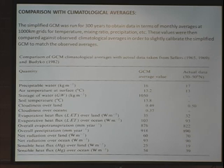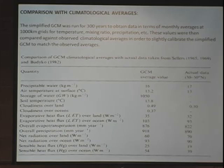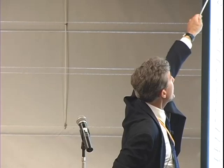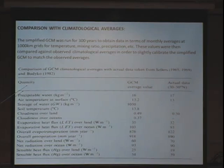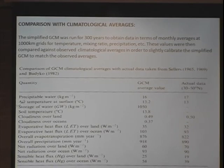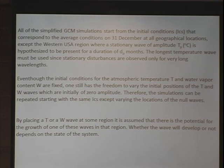In this study, we ran the simplified GCM for 300 years to obtain data in terms of monthly averages at 1,000-kilometer grids. The circumference at the 30 to 50 degree north band is roughly 30,000 kilometers, giving about 30 grids at 1,000-kilometer resolution — for temperature, mixing ratio, precipitation, etc. We then compared these values against observed climatological averages to slightly calibrate the simplified GCM, and we were comforted by the closeness of the model-generated results versus the observations.